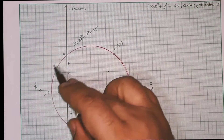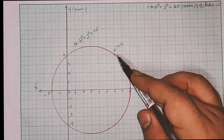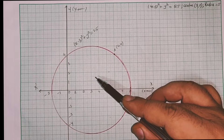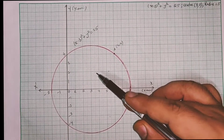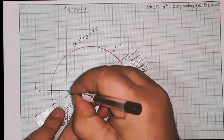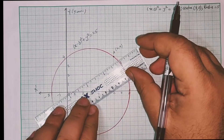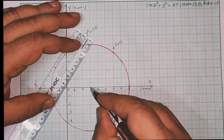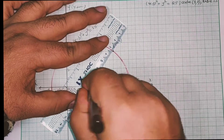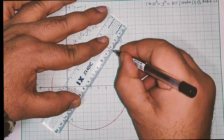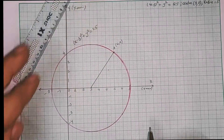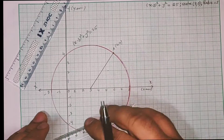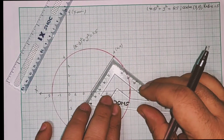Now I will draw the tangent to this circle at point A=(6,4) using the standard technique. First, I draw the radius joining the center of the circle (3,0) to point A. I will join the center to point A to get the radius at that point. Then I will draw a perpendicular at point A using a set square aligned with the radius.